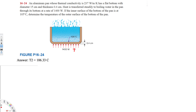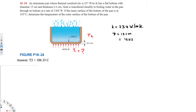The inner surface temperature is the final temperature T2, and we need to find the outer surface temperature T1, which is the initial temperature. Let's list all the given information. We have thermal conductivity K = 237 watts per meter Kelvin, and diameter D = 15 centimeters, which is the same as 15 × 10⁻² meters.